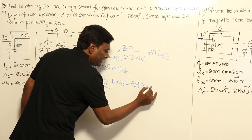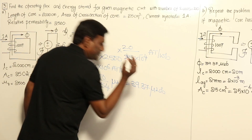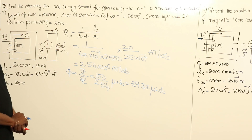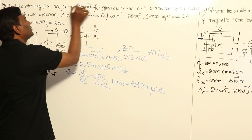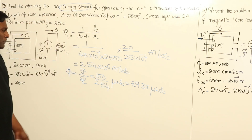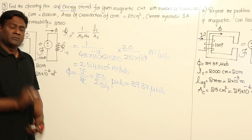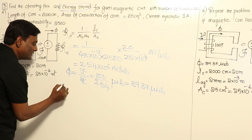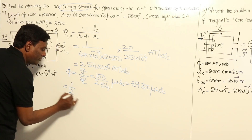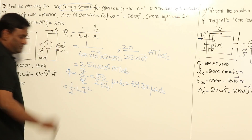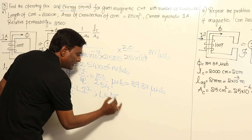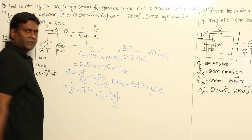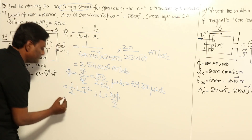The flux comes out to 39.37 micro webers. Now the second question asks us to calculate energy stored. We recall: energy = ½LI², and inductance L = NΦ/I. Substituting, energy = ½ × (NΦ/I) × I².